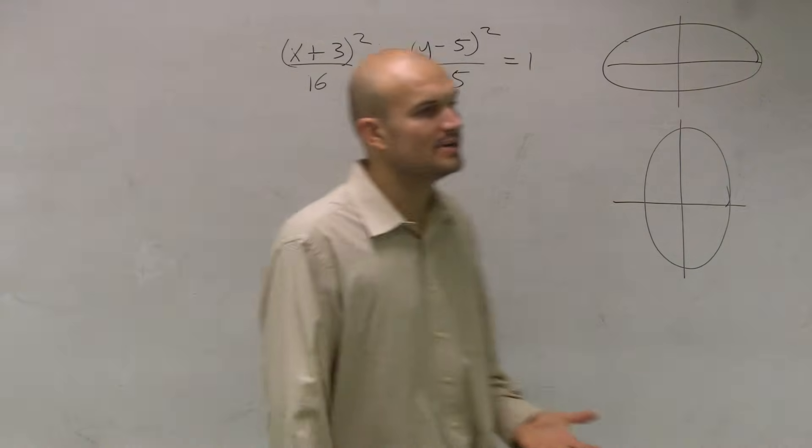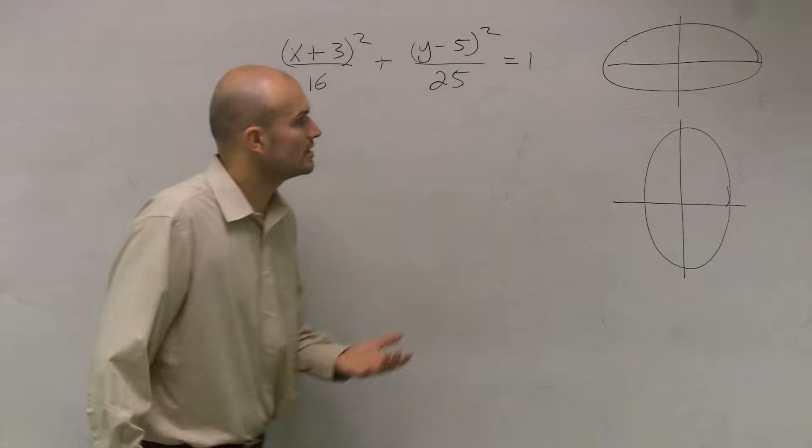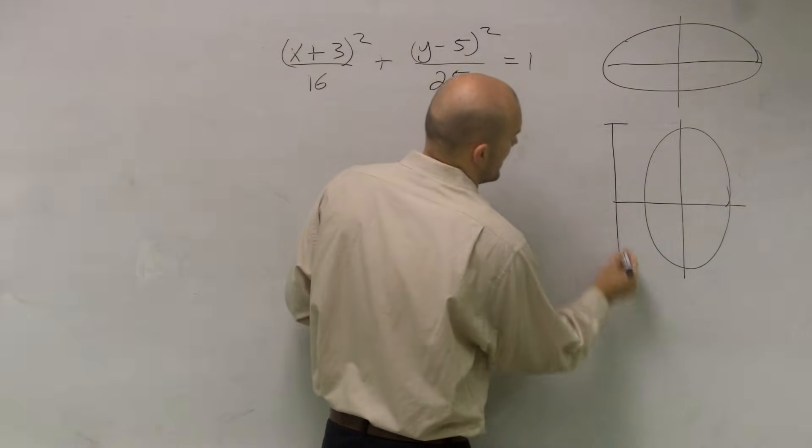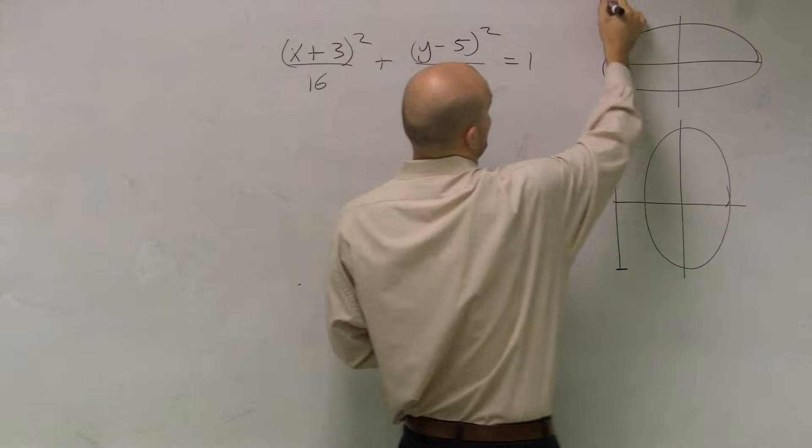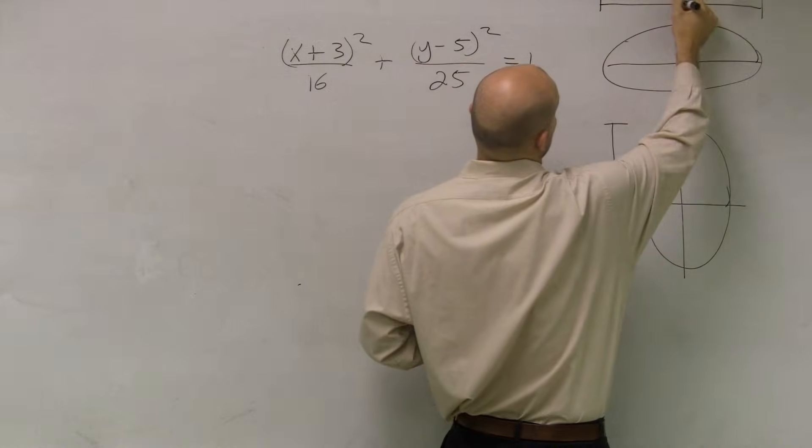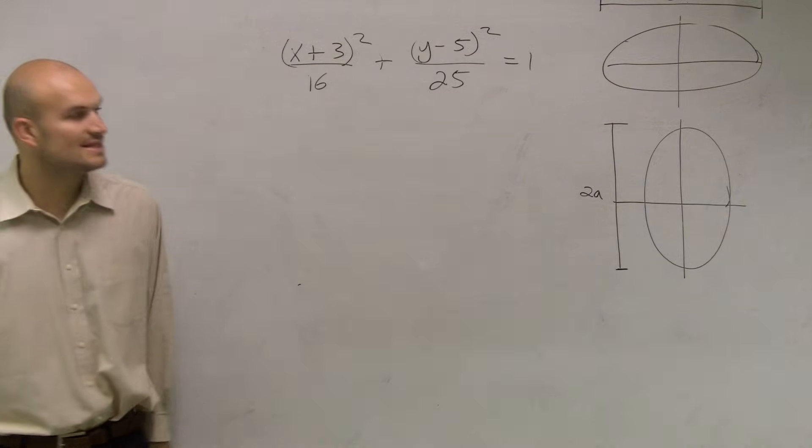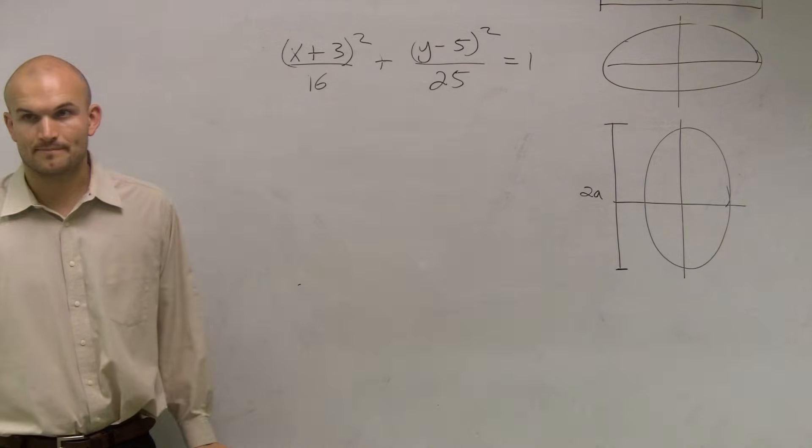For ellipses, the way that we're going to be able to determine this is we're going to look at our major axis of symmetry, which has a length of 2a. So it doesn't matter where it is. If it's vertical or if it's horizontal, the distance of it is 2a.